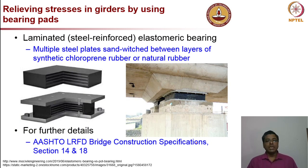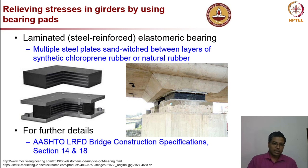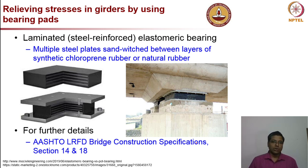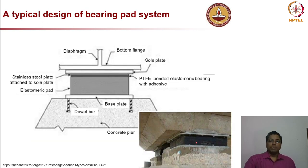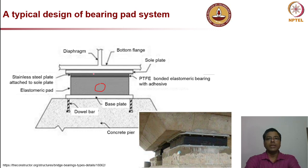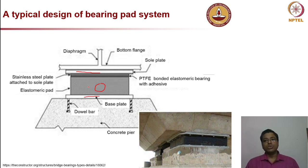In modern practice, neoprene pads — formally called laminated or steel-reinforced elastomeric bearings — are widely used. They consist of multiple steel plate laminates sandwiched between layers of synthetic or natural rubber, forming a heavy-duty industrial elastomeric bearing. Further design details can be found in AASHTO specifications, sections 14 and 18. A typical design includes a neoprene pad with steel reinforcement and stainless steel plates at the top and bottom to provide resistance against horizontal movement while transferring vertical loads.